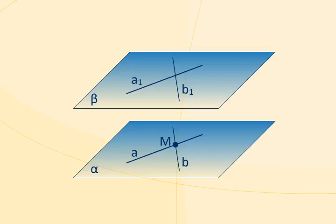The line A1 is parallel to the line A, and the line B1 is parallel to the line B. We will prove that the planes alpha and beta are parallel.